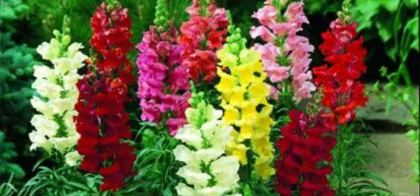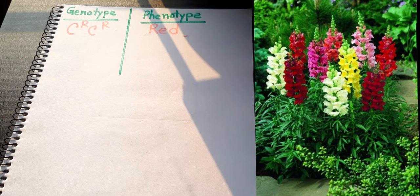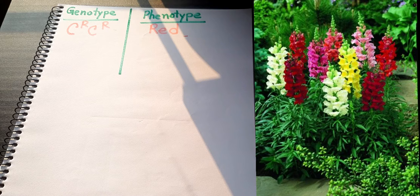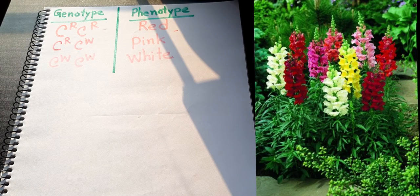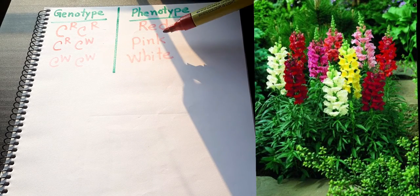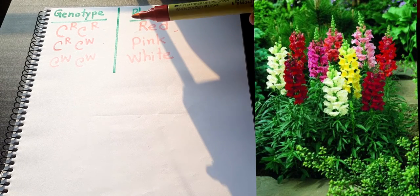You can see this is a red color here. Red color, that is CR CR. That is the genotype CR CR and phenotype red color. Here genotype CR and CW, that is pink color. And here CW and CW, that is white color. That is genotype here and phenotype here.